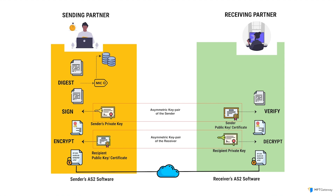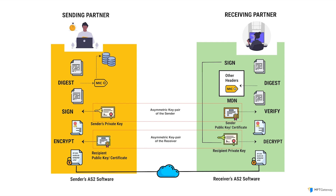Subsequently, the receiver generates an identical digital hash and signs it with their private key, effectively creating a receipt for the file. This receipt, known as the MDN or message disposition notice, is then transmitted to the sender as proof of delivery and is retained for record-keeping purposes.